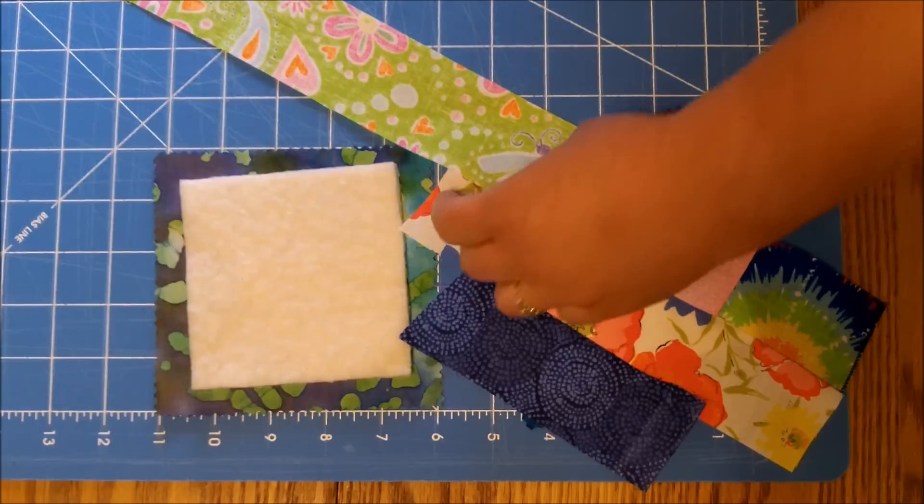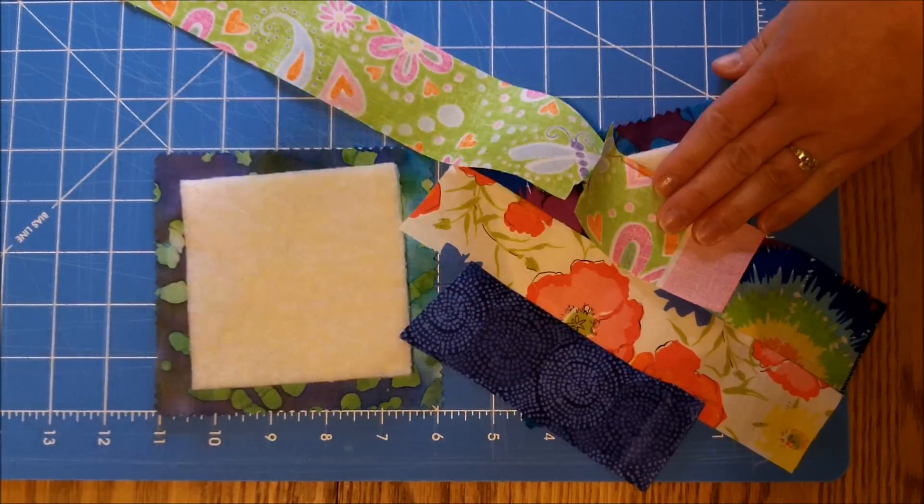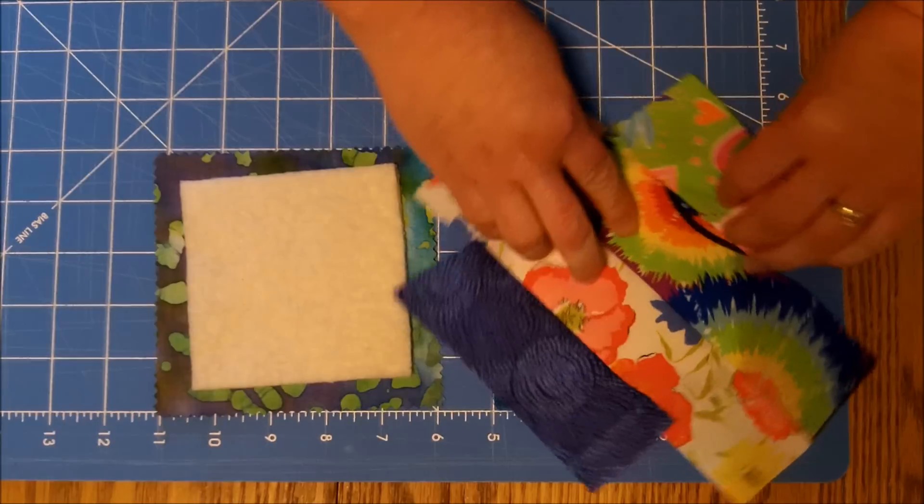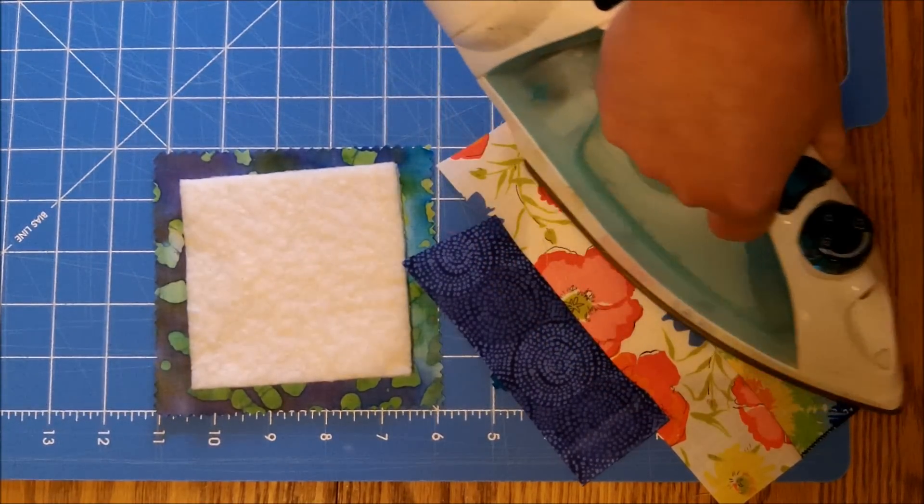Just like before, you're going to want to cut off the excess. Fold it over and iron.